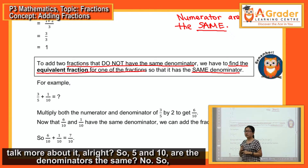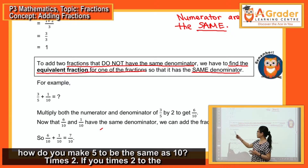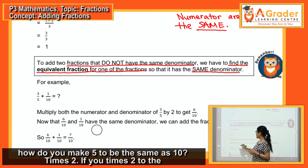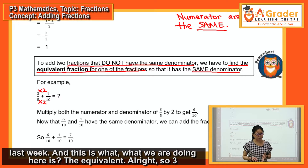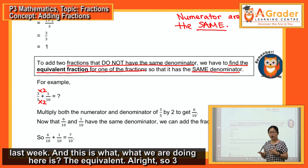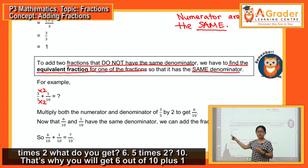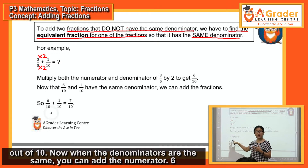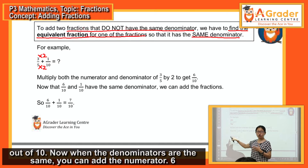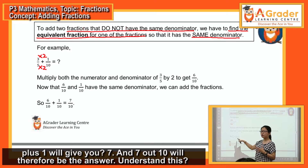For example, 3/5 + 1/10. Are the denominators the same? No. So how do you make 5 become the same as 10? Times 2. If you times 2 to the denominator, you must also times 2 to the numerator — this is the equivalent fraction you learned last week. So 3 times 2 gives you 6, and 5 times 2 gives you 10. You get 6 out of 10 plus 1 out of 10. Now the denominators are the same, so you add the numerators: 6 plus 1 gives you 7, and 7 out of 10 is the answer.